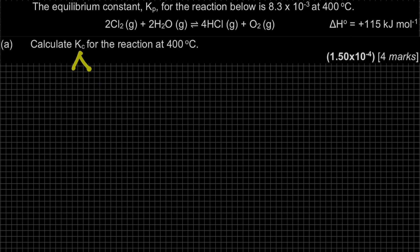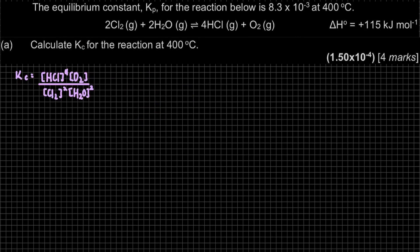Kc is only applicable for gas and aqueous phase. K will be product over reactant. Based on this equation, Kc = [HCl]⁴ × [O₂] divided by [Cl₂]² × [H₂O]². Since all species are in gas phase, all are included. The stoichiometry coefficients become the powers.